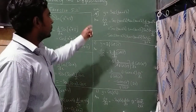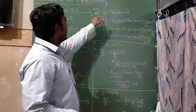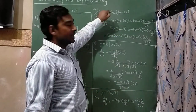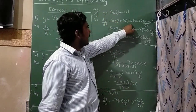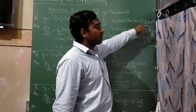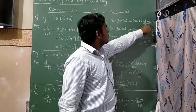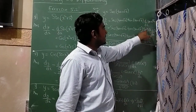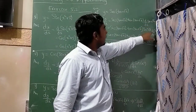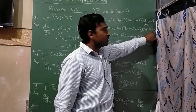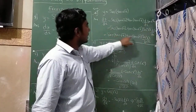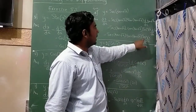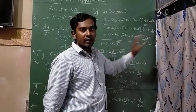The fourth question is very important: y is equal to sec(tan(√x)). d/dx of sec x is sec·tan. Now again I apply chain rule, d/dx of tan(√x). d/dx of tan is sec²(√x). Again applying chain rule, d/dx of √x — all the terms are written as is, and d/dx of √x by formula is 1 divided by 2√x.